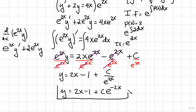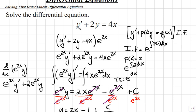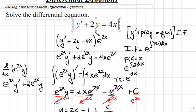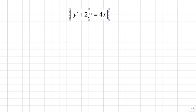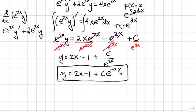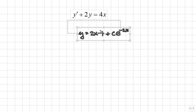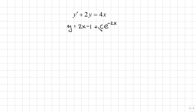We can check our solution because if we plug this into our original differential equation and find its derivative, the left side should simplify to the right side. Let's demonstrate this. We'll take our original equation y prime plus 2y equals 4x, and our solution y equals 2x minus 1 plus c times e to the negative 2x, and plug both y and y prime into the left side.